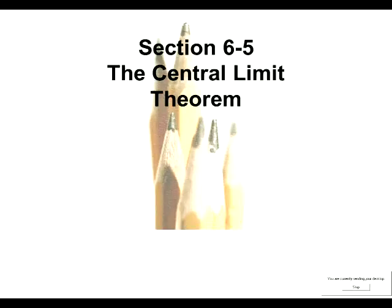If you're given a probability to the right of some Z-score — say the probability to the right is 0.2 — and you want to find that Z-score, does inverse norm of 0.2 give you the answer? No. When you use inverse norm, you always have to enter the area to the left of the Z-score you're looking for. So if the area to the right is 0.2, the area to the left is 0.8 — punch inverse norm of 0.8, not 0.2.